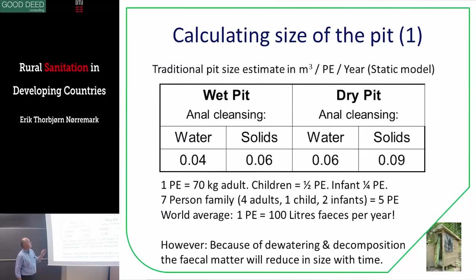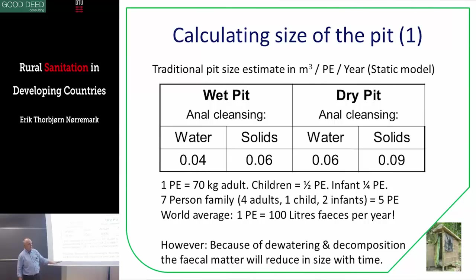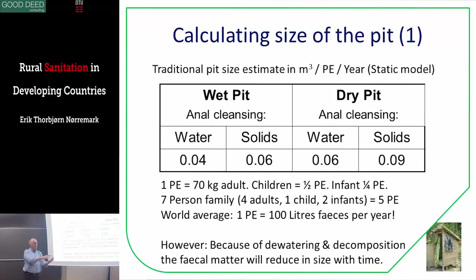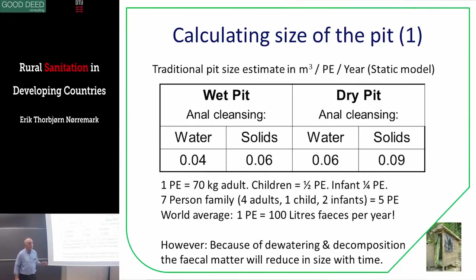PE is a person equivalent. It's equal to an adult of 70 kilos. According to body weight, if you have a child of 35 kilos, that's half a PE. An infant is a quarter of a PE. So when I talk about a standard family of five PE, it can actually be four adults — parents and older children — plus one small child and two infants, so you might have up to seven people. But we use as a standard five people, five adults.